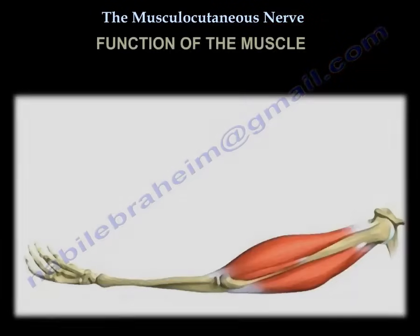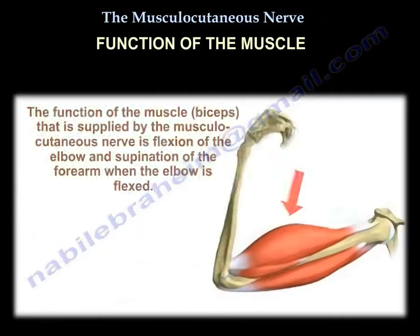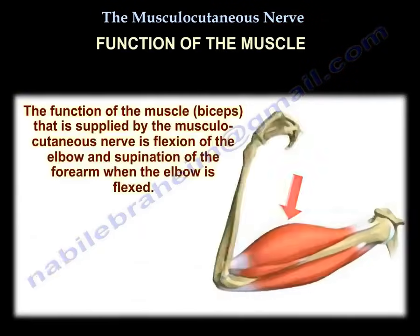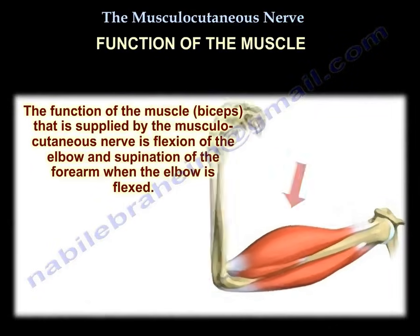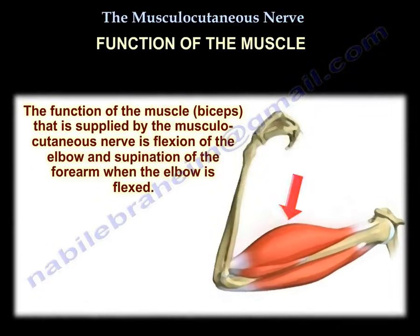Function of the nerve: it flexes the elbow and it supinates the forearm when the elbow is flexed.